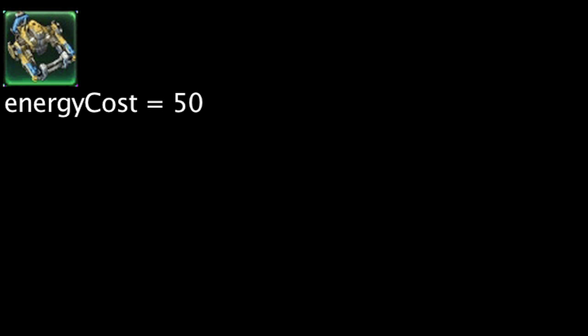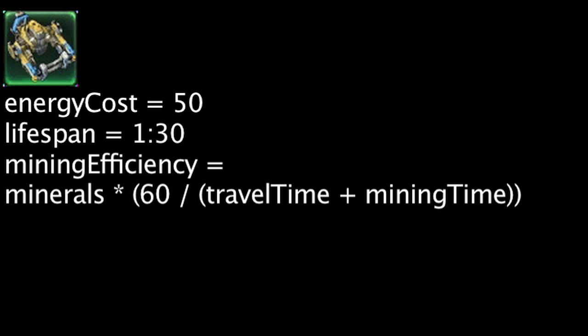Let's take a look at mules now. A mule is a Terran worker unit which can be spawned from an orbital command using 50 energy. It also lasts 90 seconds. Its mining efficiency is equal to its minerals gathered times 60 divided by its travel time plus its mining time.